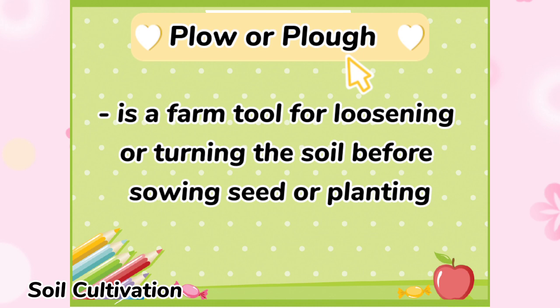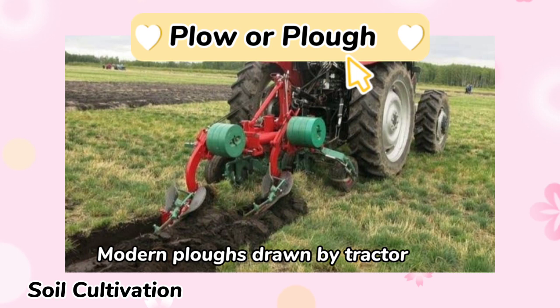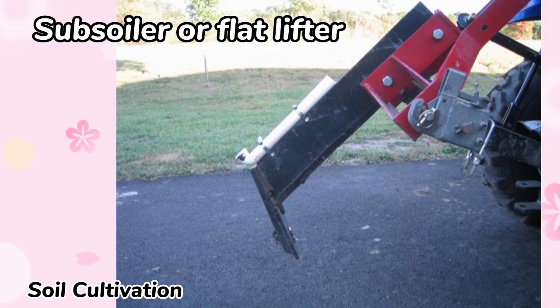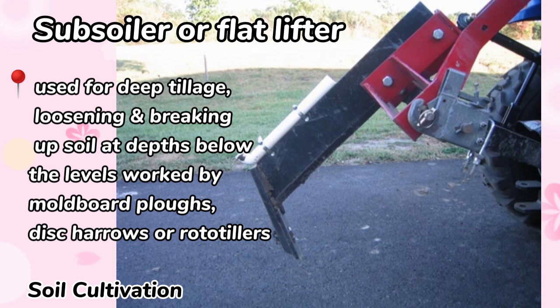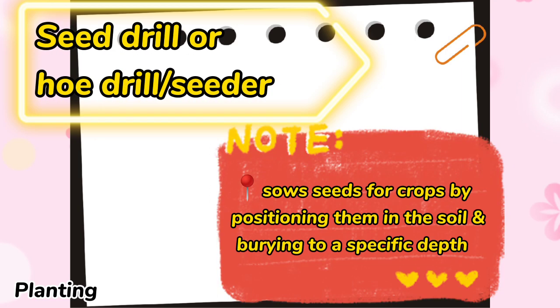Plow is a farm tool for loosening or turning the soil before sowing seed or planting. Subsoiler or flat lifter is an implement used for deep tillage, loosening and breaking up soil at depths below the levels worked by moldboard plows, disc harrows, or rotors. Seed drill or hoe drill or seeder is a device used in agriculture that sows seeds for crops by positioning them in the soil and burying to a specific depth. This ensures that seeds will be distributed evenly.